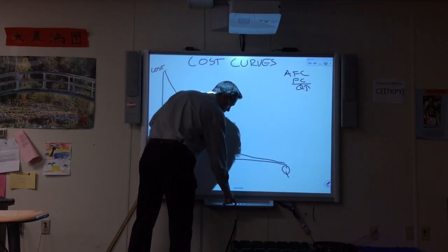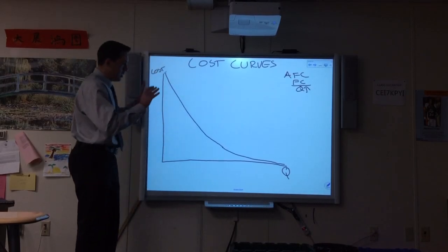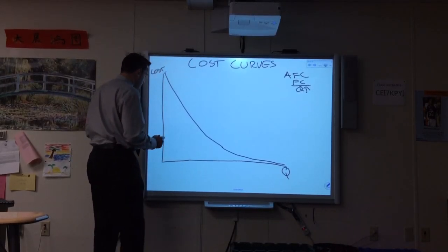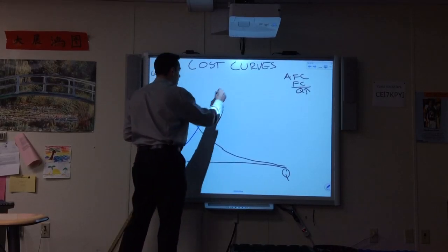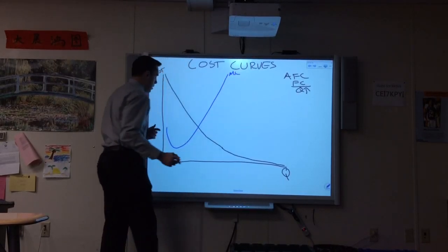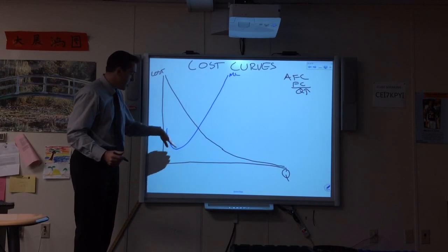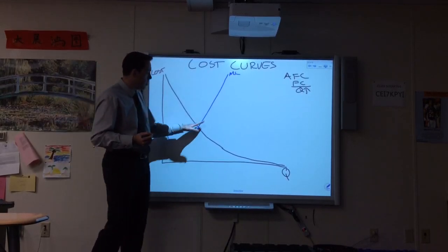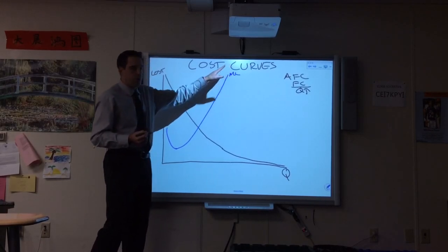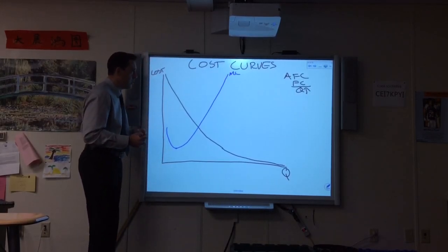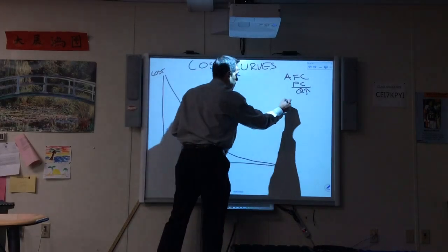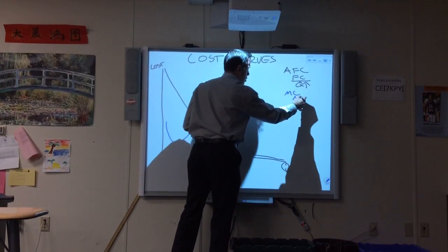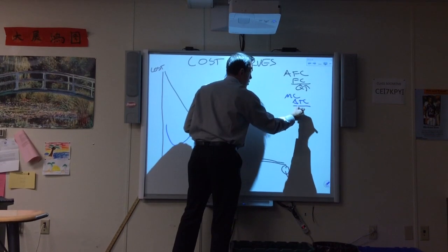Our next cost curve, because it's independent of the fixed cost, is the marginal cost. This looks like the Nike swoosh. It decreases due to specialization, bottoms out when marginal product is highest, and then due to overcrowding and diminishing marginal returns, it increases. The blue line is our marginal cost curve, and you calculate that as the change in total cost divided by the change in quantity.